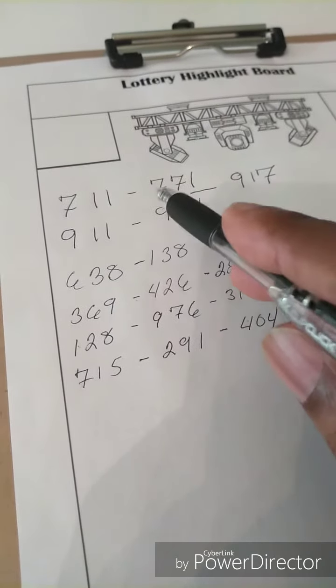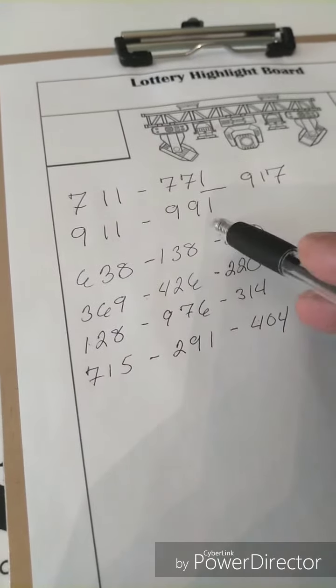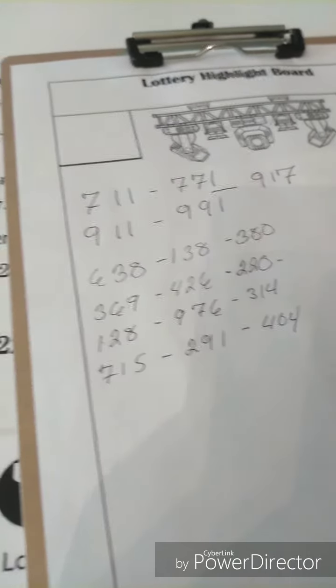We know that 7 can mirror to a 2, we know 9 can mirror to a 4, we know 1 can mirror to a 6, and that will give you a different outcome as well.